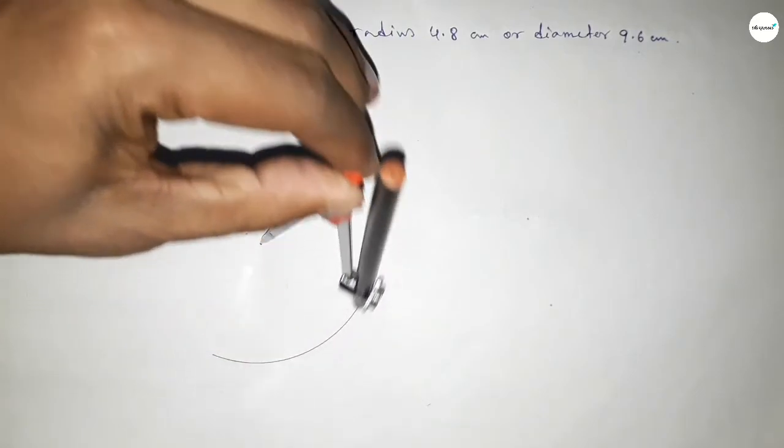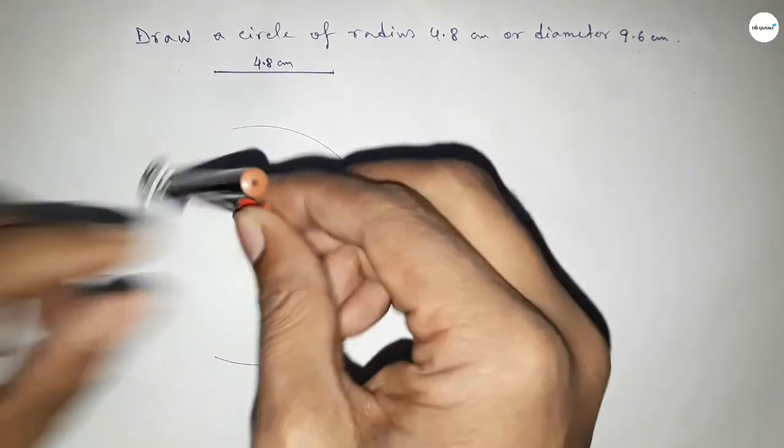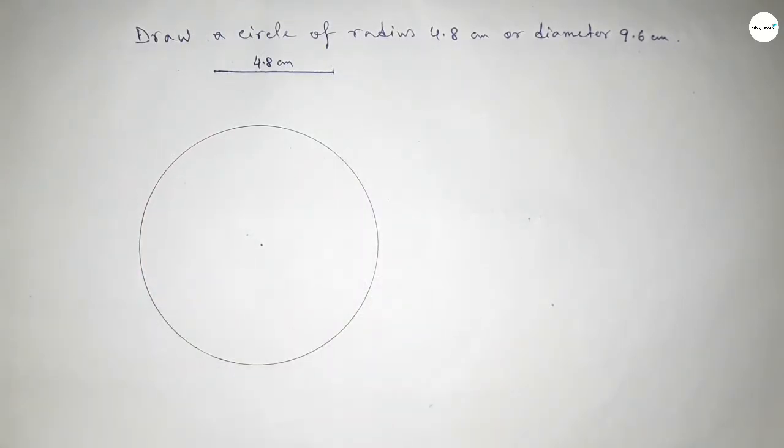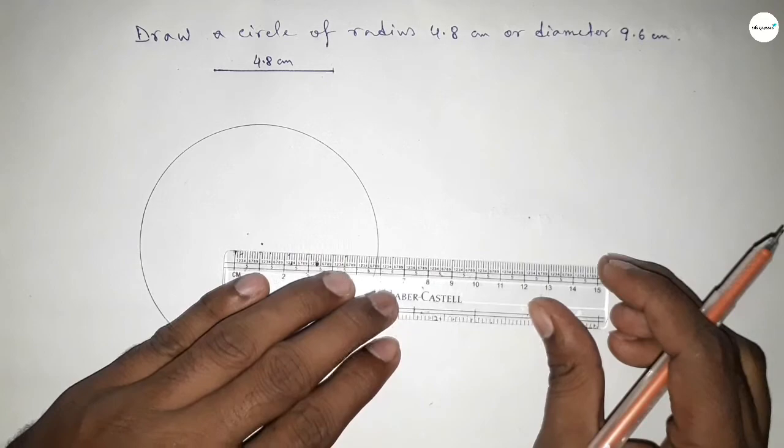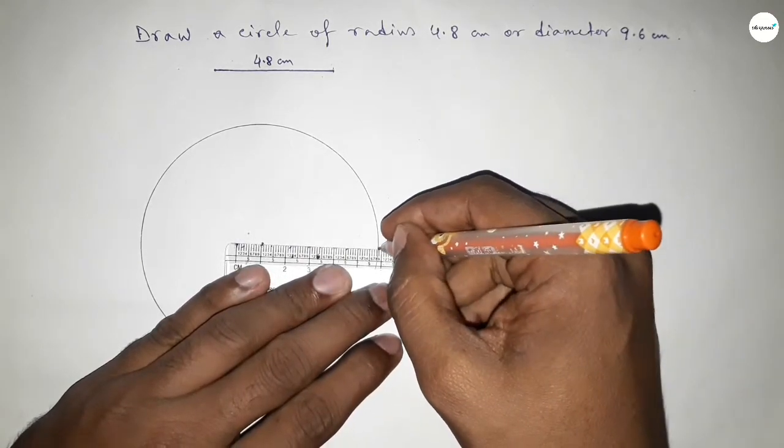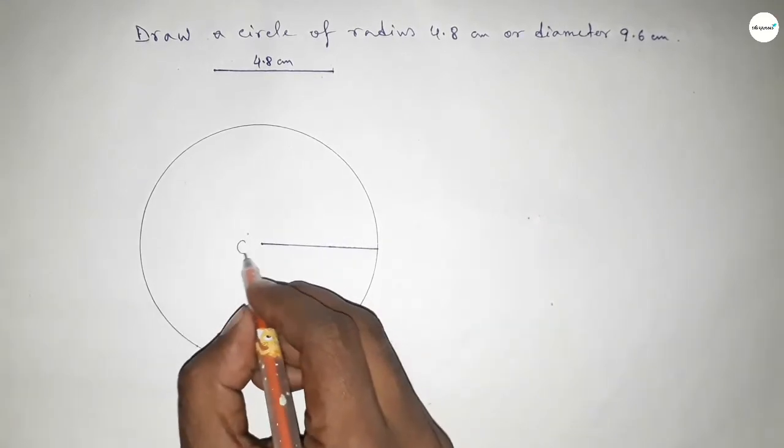Drawing an arc by this way which represents a circle with radius 4.8 centimeter. Now joining this one.